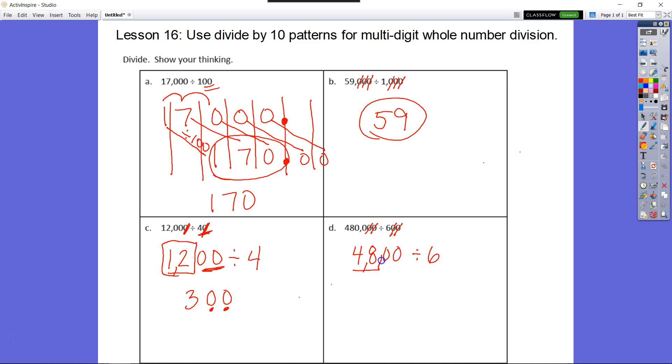Now we say, well, 48 divided by six would be what? Eight, and then we have two zeros remaining, so 800.